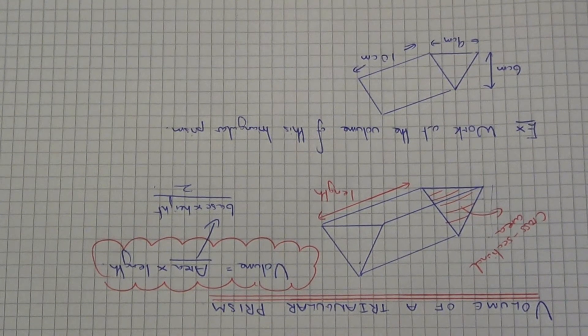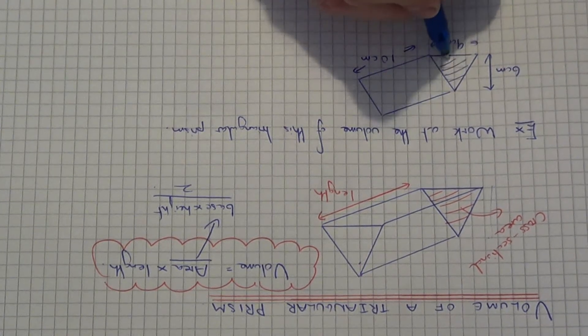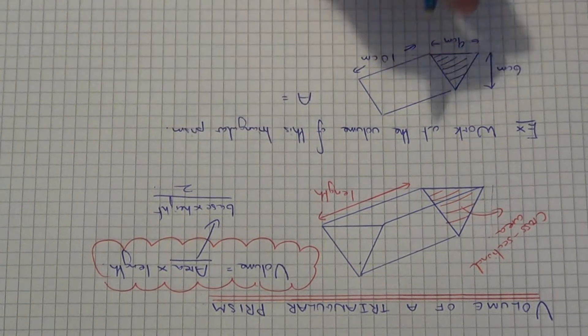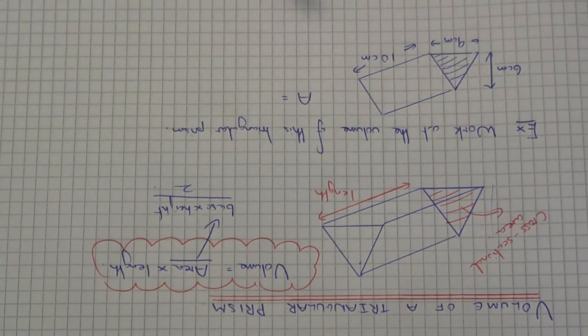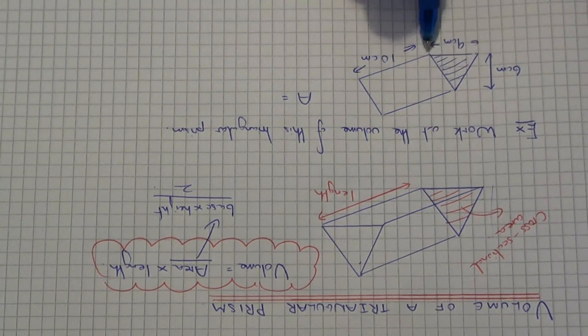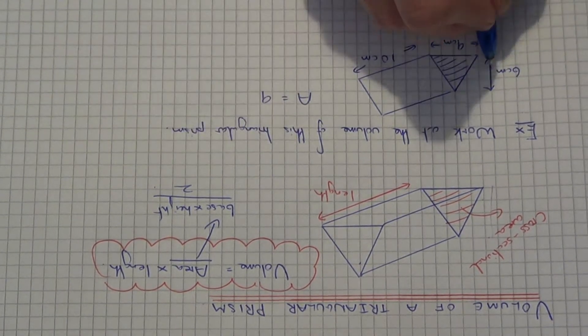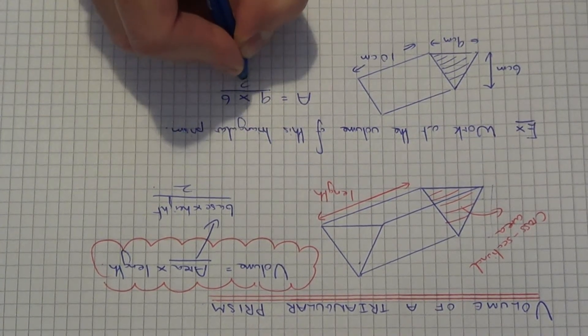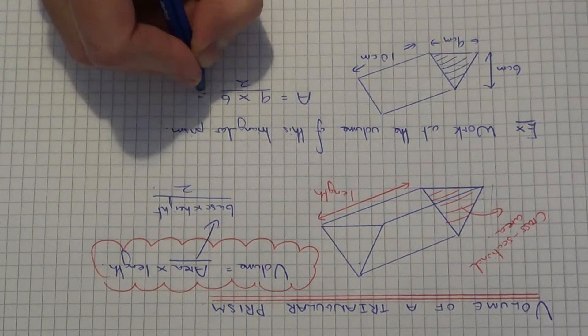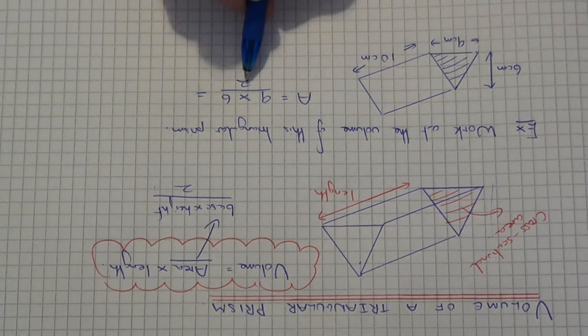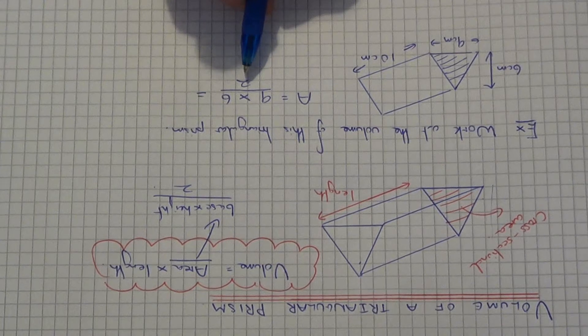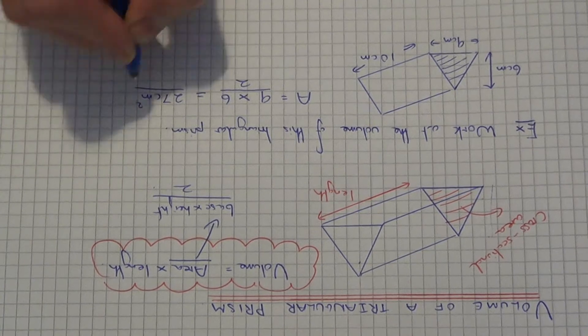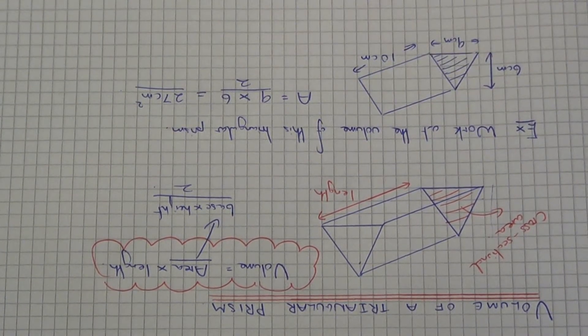First of all, we need to work out the cross-sectional area of this prism. To do this, since it's a triangle, you need to do base times height divided by 2. So the base of the triangle is 9, the height of the triangle is 6. So we'll do 9 times 6, and then divide this by 2. So 9 times 6 is 54, and then if we divide that by 2, that will give us 27 centimetres squared. This is the cross-sectional area of this triangular prism.